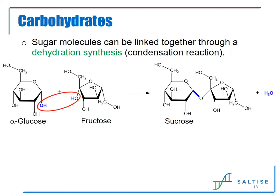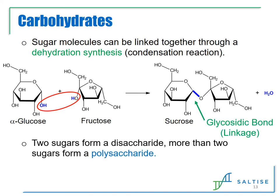Just like in proteins, sugar molecules can also be linked together through a dehydration synthesis. By removing water from connecting two sugar molecules, a new covalent bond is formed called a glycosidic bond or linkage. When two sugars are linked together, they form a disaccharide. Many of the foods we eat contain disaccharides — for example, sucrose, which is table sugar, comes from glucose and fructose linked together. Lactose, which is found in milk, comes from linking glucose with galactose.